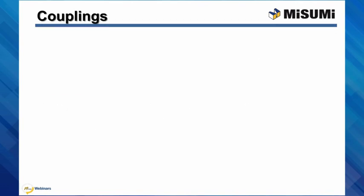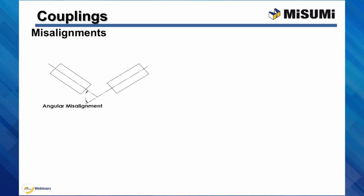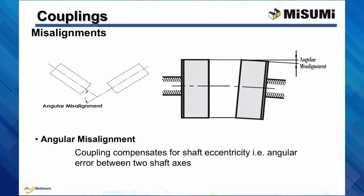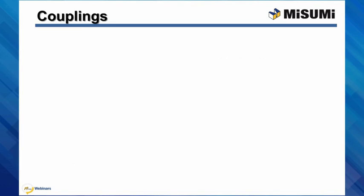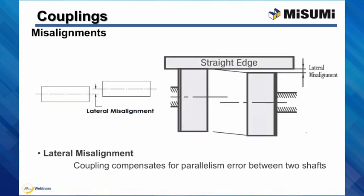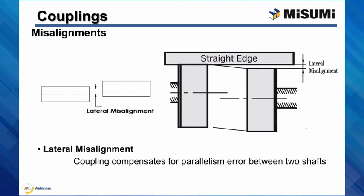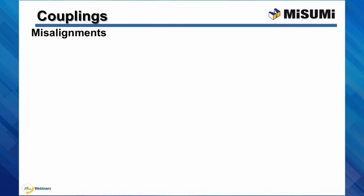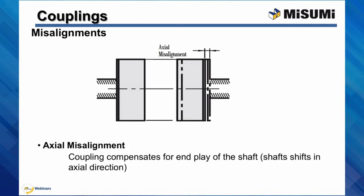What kind of misalignments can couplings compensate? One is angular misalignment, where the coupling compensates for shaft eccentricity — that is, angular error between two shaft axes. There is also lateral misalignment, when the coupling compensates for parallelism error or offset between two shaft axes. And axial misalignment, where the coupling compensates for end play of the shaft — that is, when the shaft shifts in the axial direction.